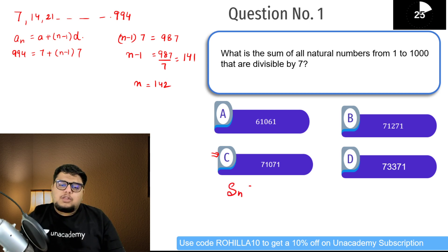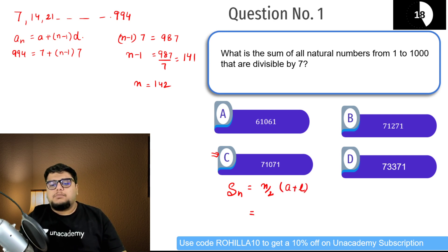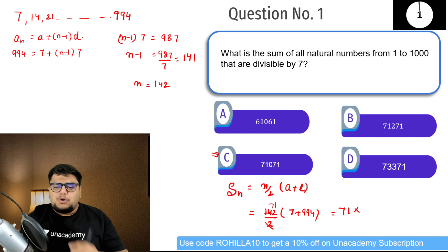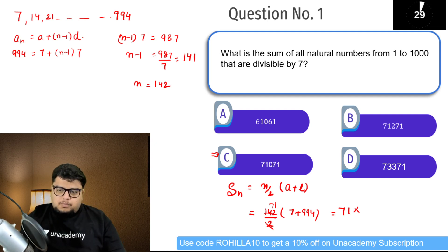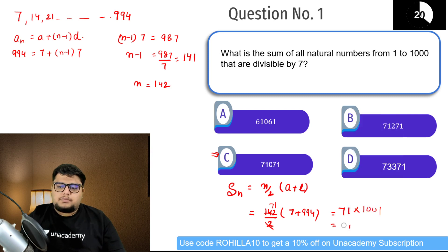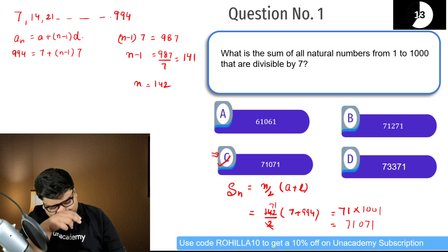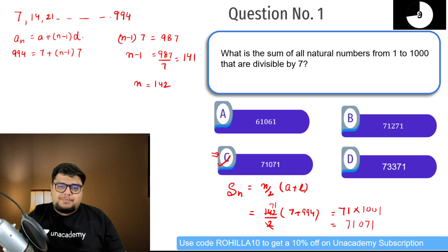Sum of n terms का formula use करूंगा: n/2 × (first term + last term)। n = 142, तो 142/2 = 71। 71 × (7 + 994) = 71 × 1001 = 71,071। तो C should be the correct answer। nth term formula से n निकाला, फिर sum of n terms formula use किया।